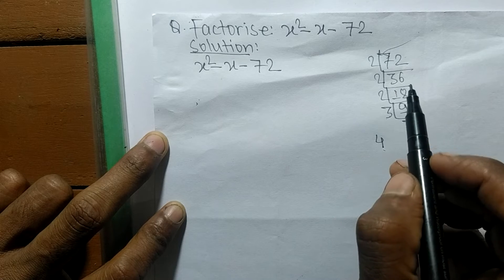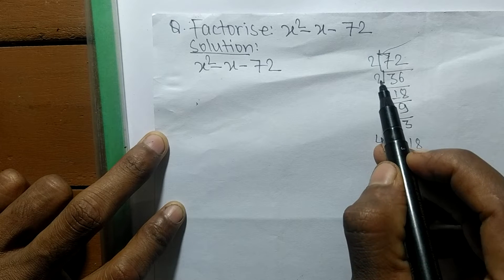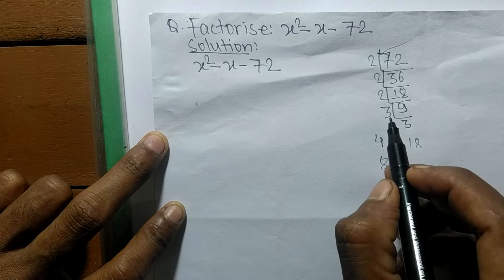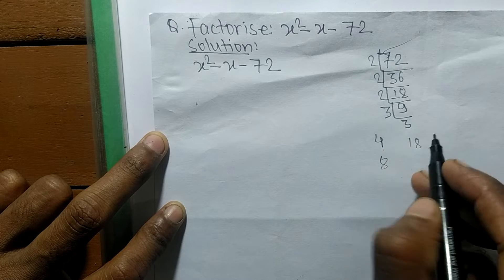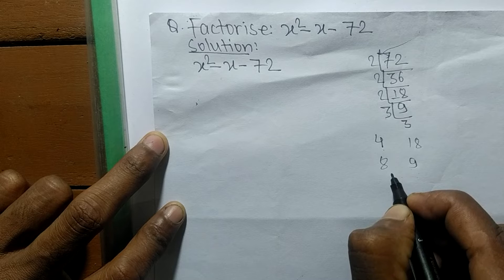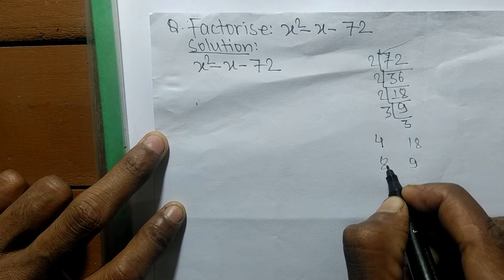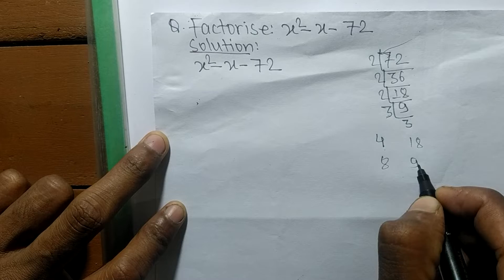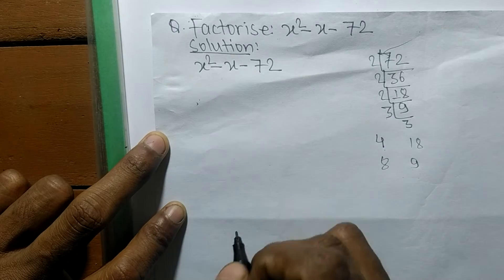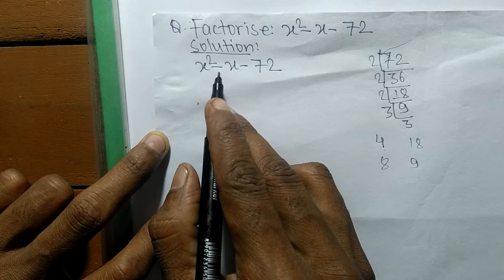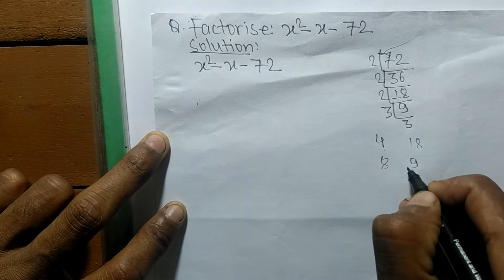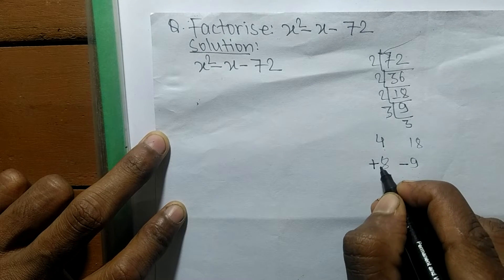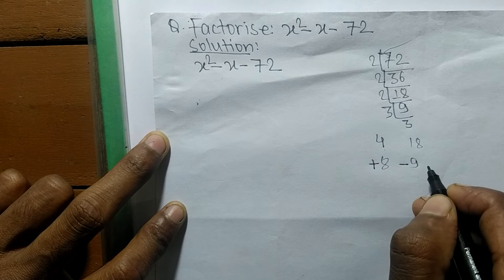Let's try multiplying three numbers: 2 times 2 is 4, and 4 times 2 is 8. The remaining factors are 3 times 3 which is 9. Now 8 plus 9 equals 72, and 9 minus 8 equals 1. Since we need minus 1, we use minus 9 plus 8, giving us minus 1. This works.